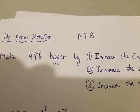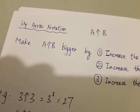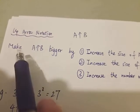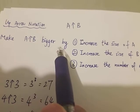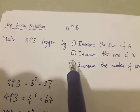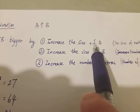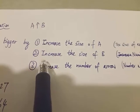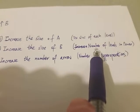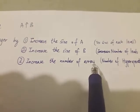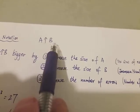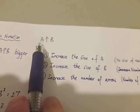Before ending this video, let's talk about one more thing related to the up arrow notation from previous videos. So a to-arrow b means a to the power of b. To make a-arrow-b bigger, there are three options: increase the size of a — which is equivalent to the size of each level; increase the size of b — which stands for the number of levels in the tower; or increase the number of arrows, which represents higher hyperoperators. Which option gives you the biggest number and which gives the smallest?